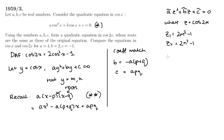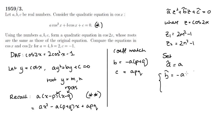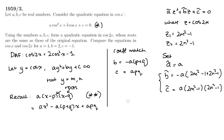We would like to match Ã, B̃ and C̃ with the coefficients. Setting Ã equal to A, then B̃, using B equals minus A(p plus q), would be minus Ã times (2m squared minus 1 plus 2n squared minus 1), because z1 and z2 are the roots. And C̃ equals A times (2m squared minus 1)(2n squared minus 1), which equals Apq.